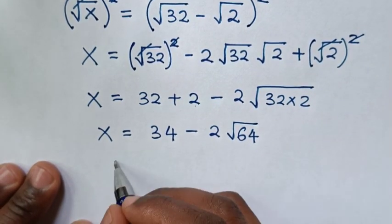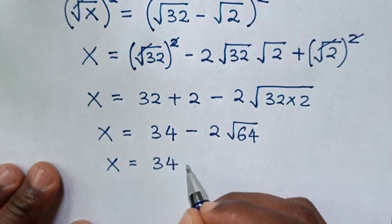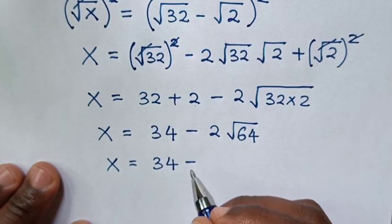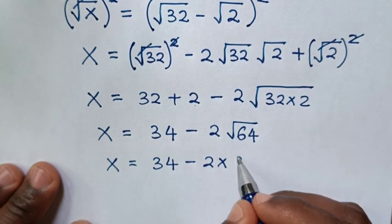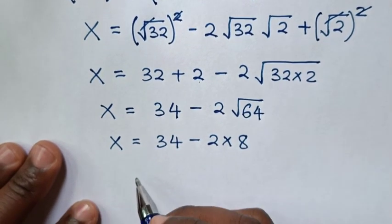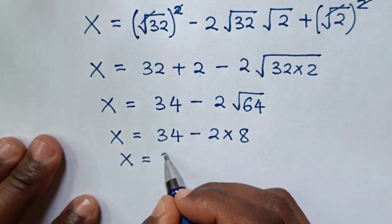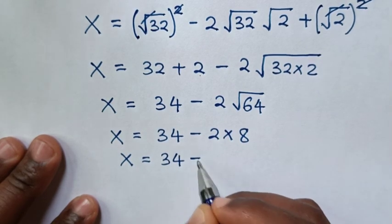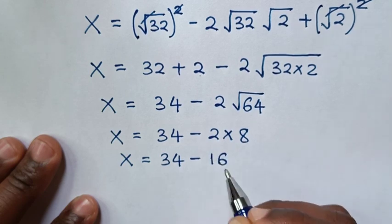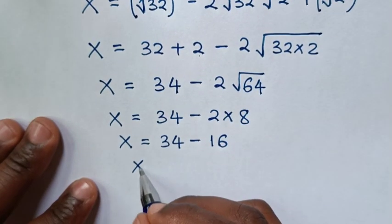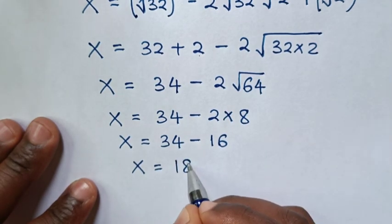Then it will be x is equal to 34, then minus 2 times square root of 64 is 8. Then it will be x is equal to 34 minus 2 times 8 is 16. Then x is equal to 34 minus 16 is 18.